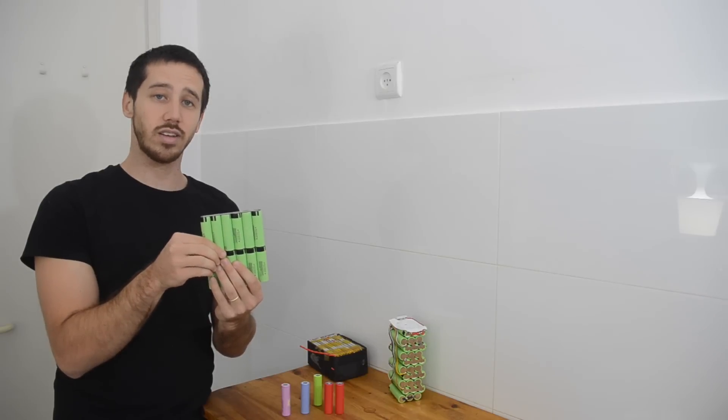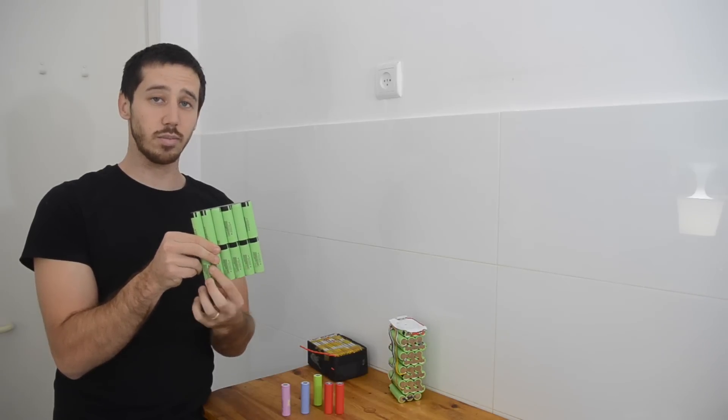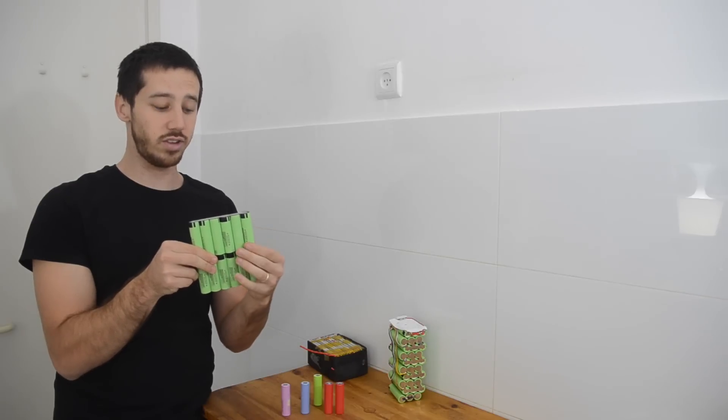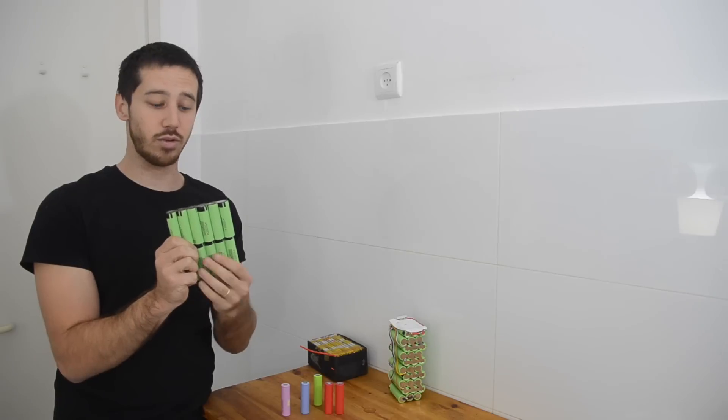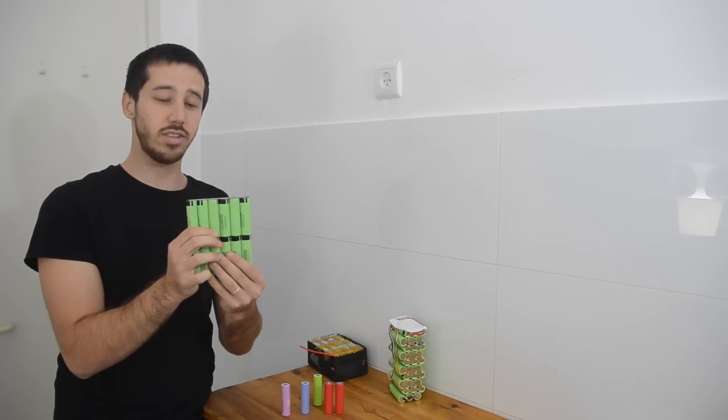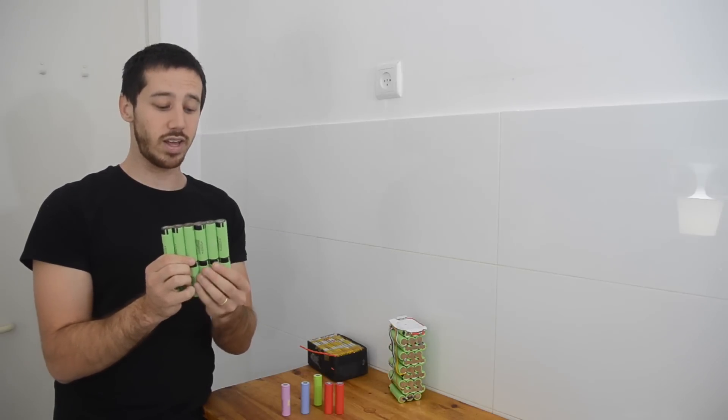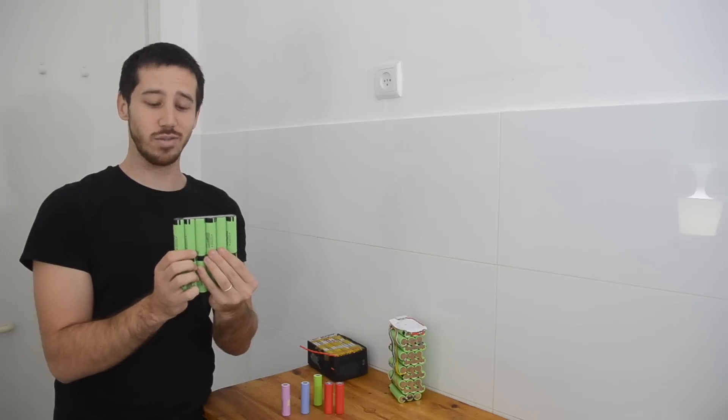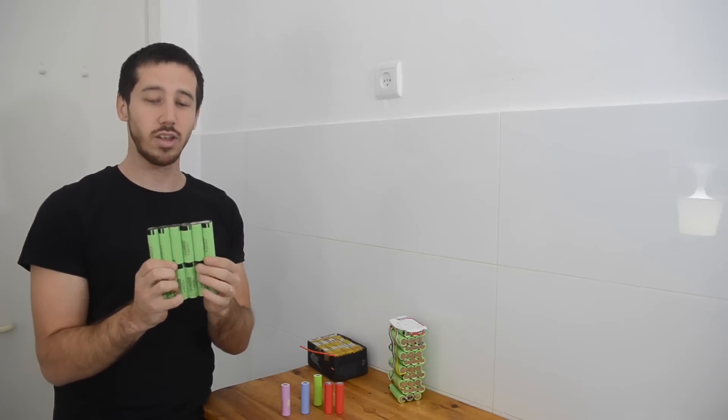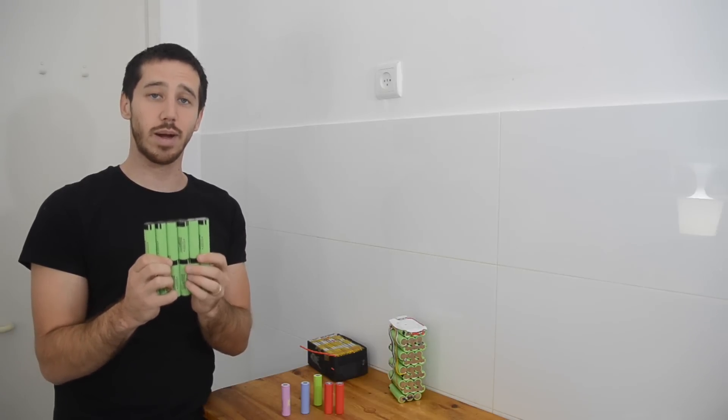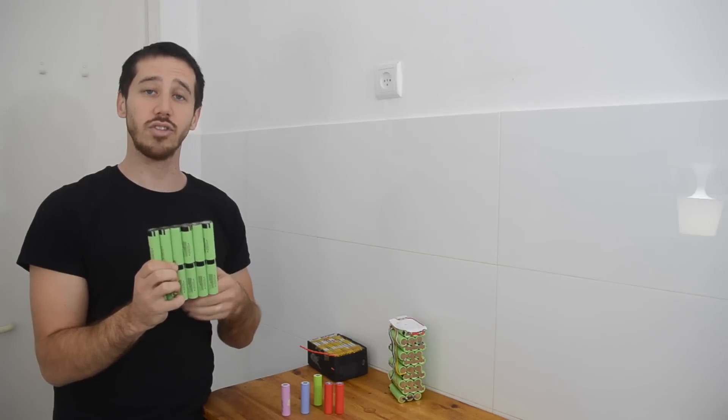Now what I've created is a series connection where I have six cells in parallel and then two cells in series, and so instead of being a 3.7 volt pack, which is what this was, when I wire them in series, now I've created a 7.4 volt pack. Now the important thing to note is that when you wire in series you don't change the amp hours. So this is still a 20.4 amp hour battery that I've created here, I've just doubled the voltage.